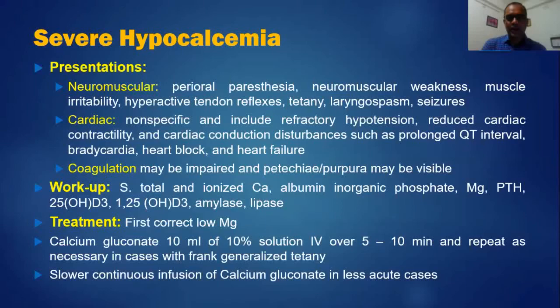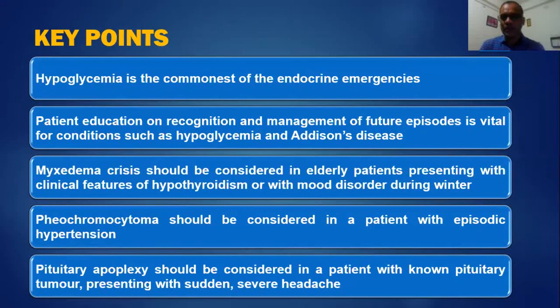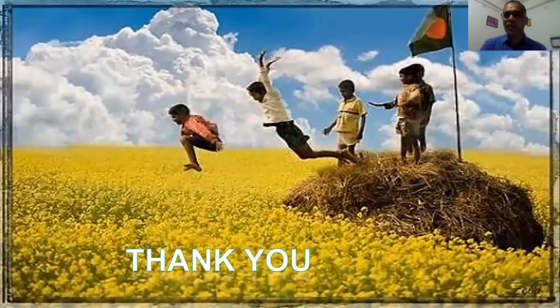In conclusion, key points are: hypoglycemia is the most common endocrine emergency encountered in our country and worldwide, and patient education on recognition and management of future episodes is vital. Myxedema crisis should be considered in elderly patients presenting with features of hypothyroidism and mood disorder, especially during winter. Pheochromocytoma should be considered in patients with episodic hypertension. Pituitary apoplexy should be considered in a patient with a pituitary tumor presenting with sudden and severe headache. Thank you all for your patience.